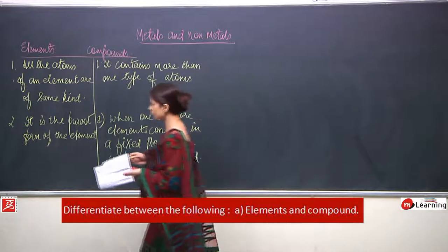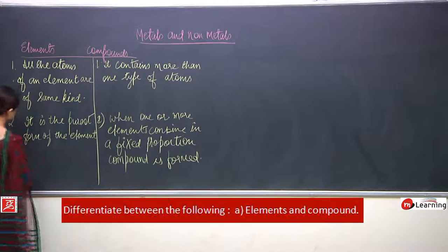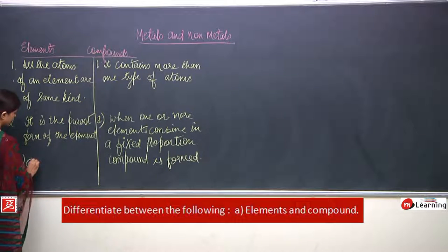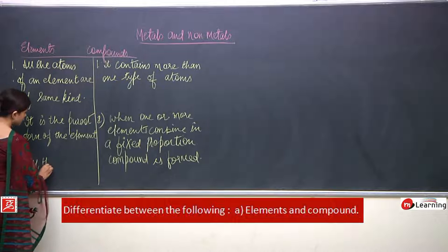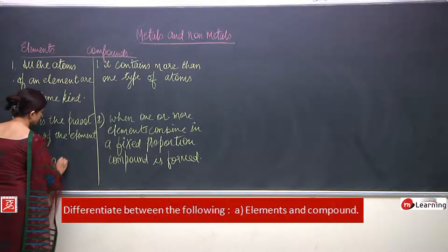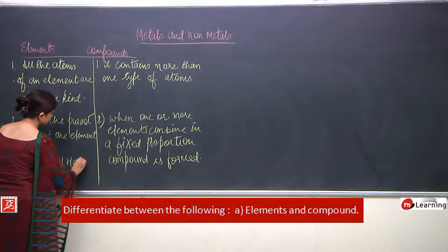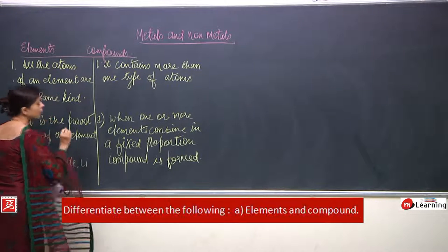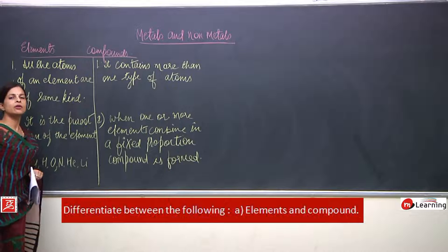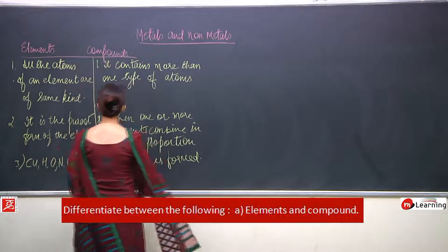As examples: Cu, hydrogen, oxygen, nitrogen, helium, lithium — all these are elements. Now, what are the compounds? Like hydrochloric acid, water (H₂O), H₂SO₄ — you can see when I write H₂O, SCl, H₂SO₄, we do not have only one kind of element in a compound.